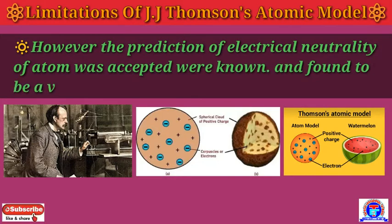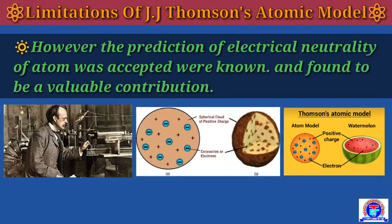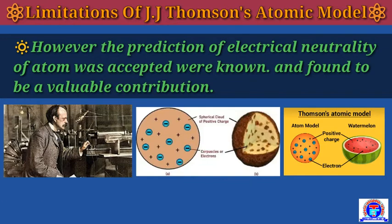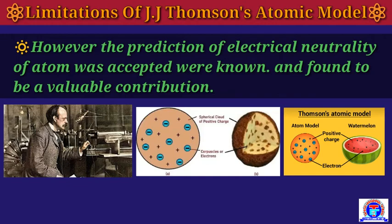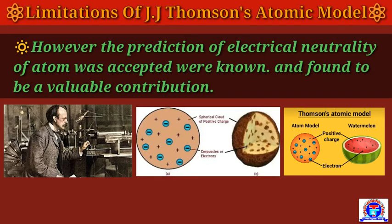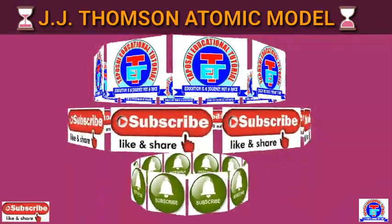However, the prediction of the electrical neutrality of the atom was accepted and found to be a valuable contribution. J.J. Thomson was one of the greatest scientists who gave the concept about the atom. So here we have understood the Thomson atomic model — the plum pudding model and the watermelon model. I hope you understood this portion clearly and enjoyed this class. Thank you for watching, see you next time.